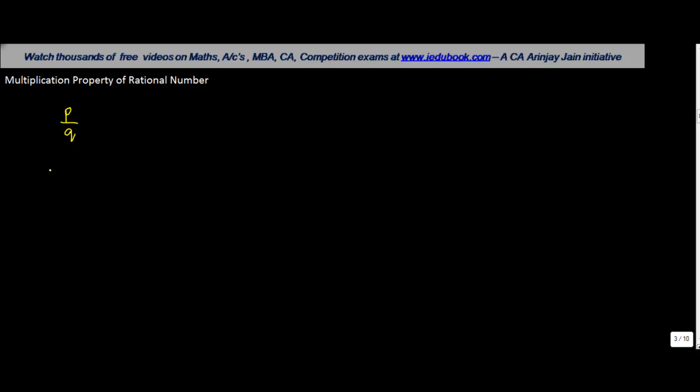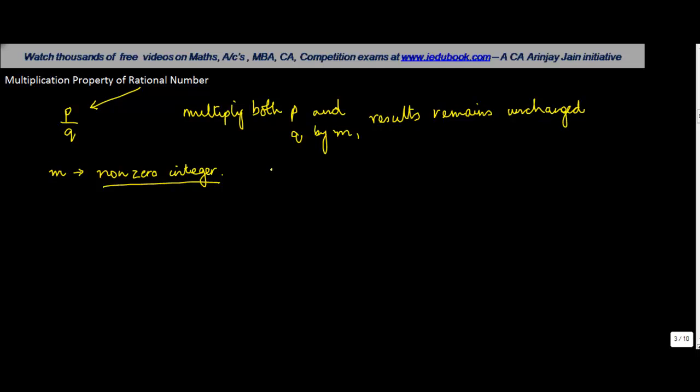Let's say you multiply it by m, where m can be anything which is a nonzero integer. Now, p upon q is a rational number and m is a nonzero integer. Then if you multiply both the numerator and denominator—multiply both p and q by m—the results remain unchanged.